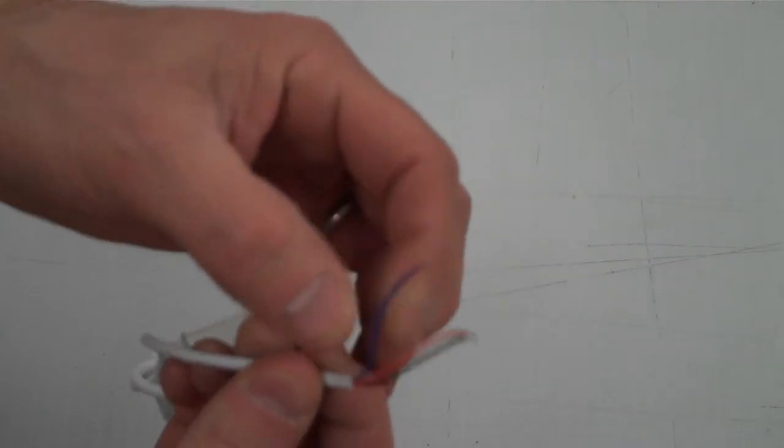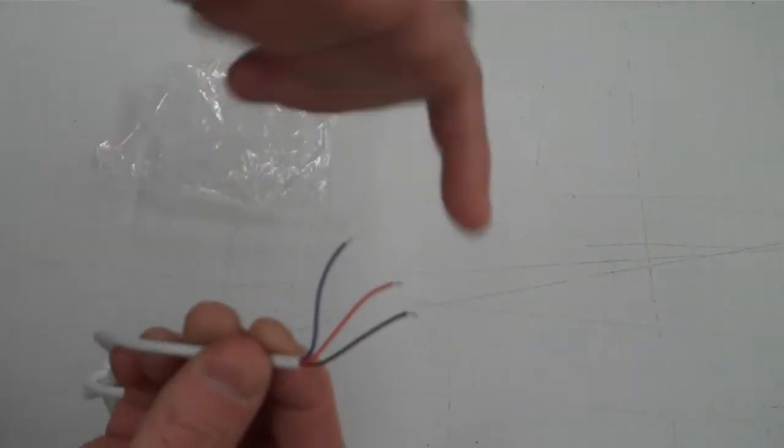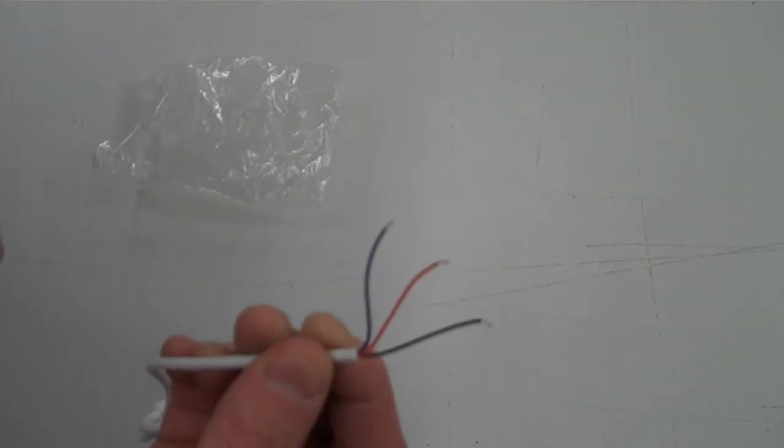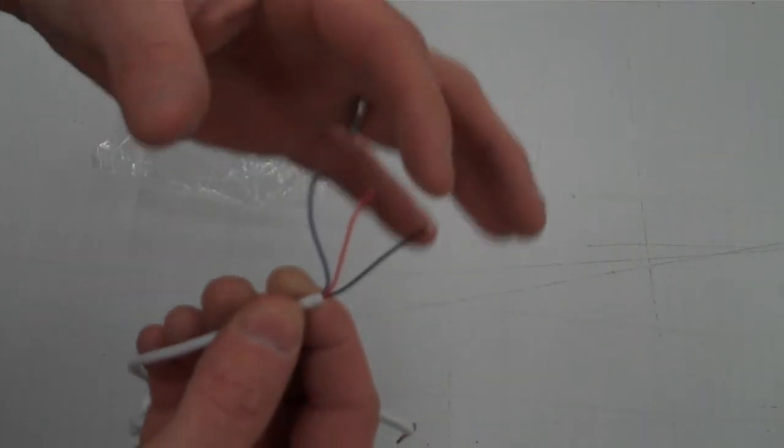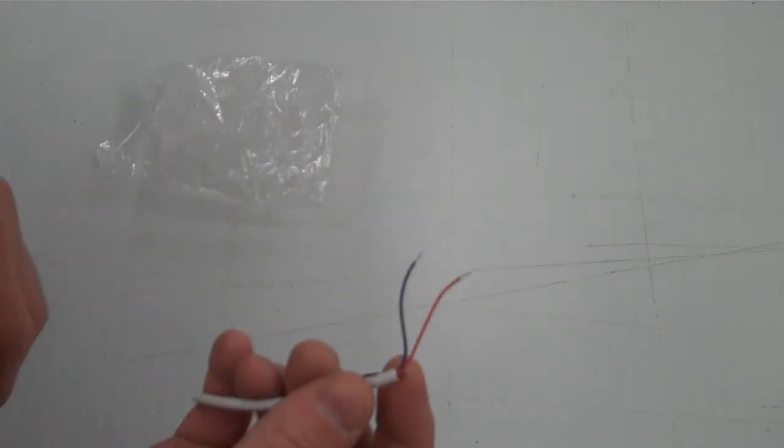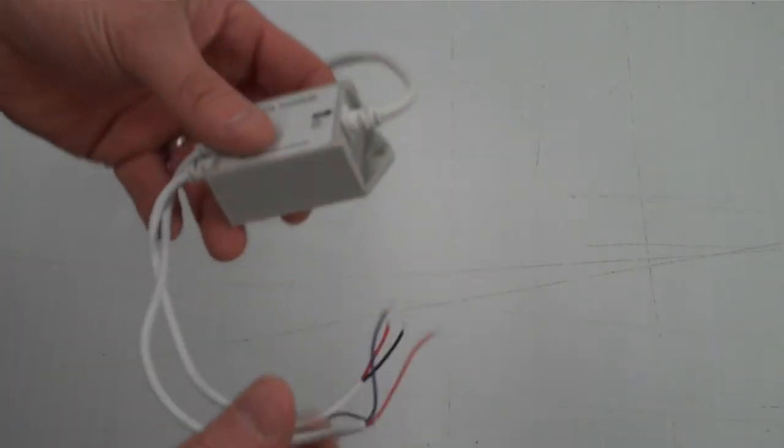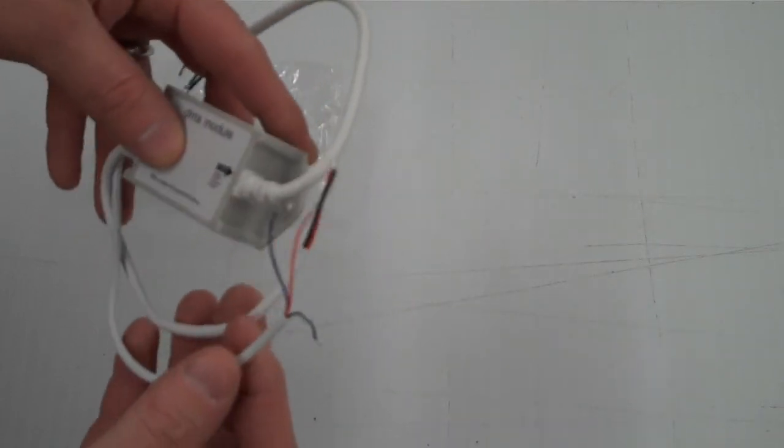And then on here, this is the DMX signal in and it has a ground cable. Now almost all of what the holiday lighting community does does not involve using this ground cable, so you can cut that right off. And then this is the two wires for the CAT5 connection. For individual wiring, just check our website in our knowledge base.